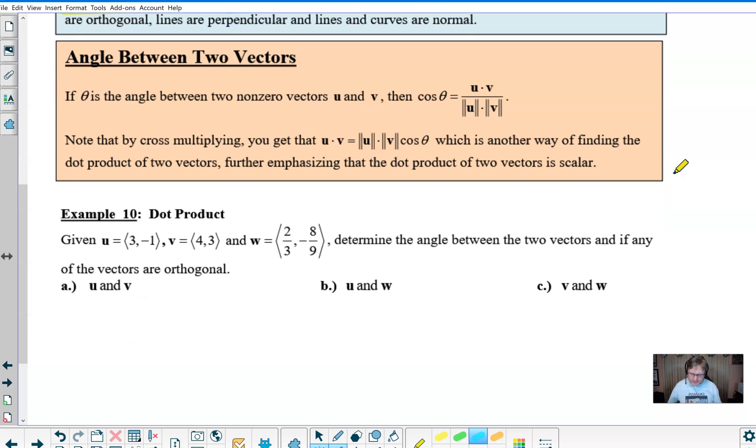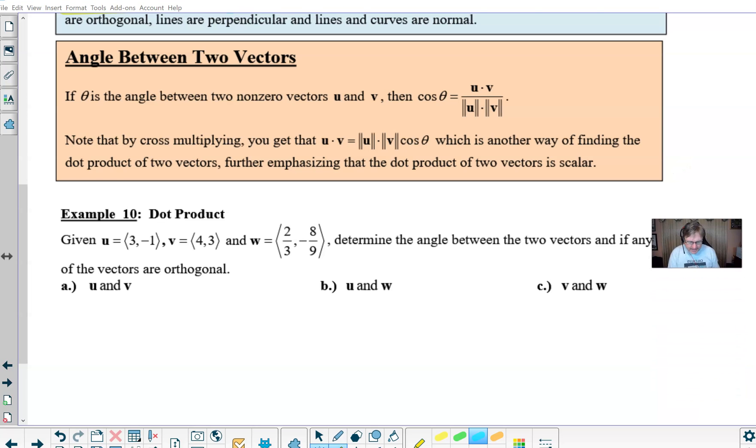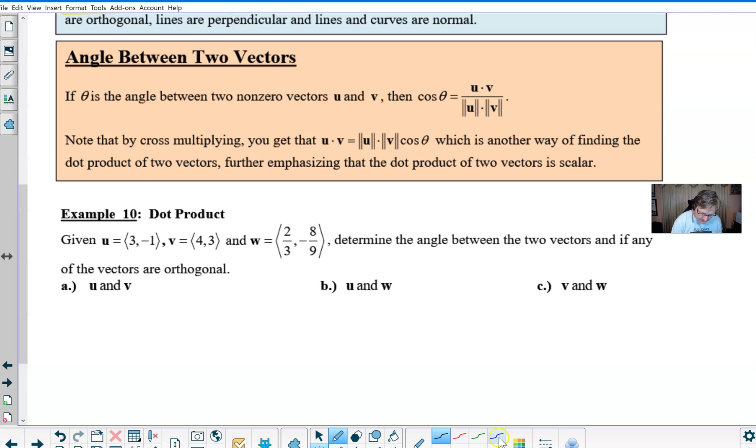So what we're going to do here is take a look at our example 10 that gives you three vectors and asks you to determine the angle between the two vectors that I provide and then state if maybe we have a pair that happen to be orthogonal. So let's take a look here.